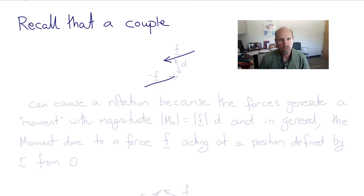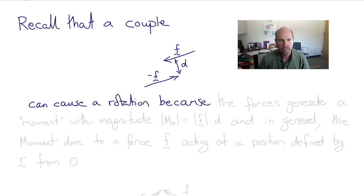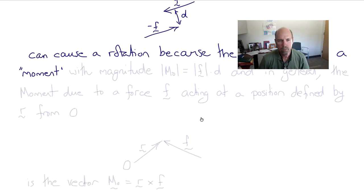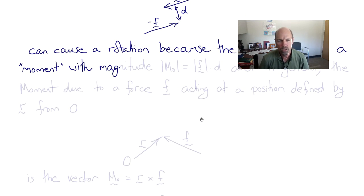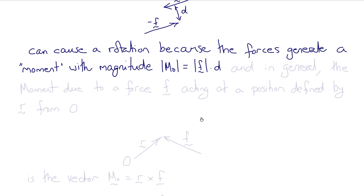Today we will introduce Newton's laws for angular motions. Let's start by recalling briefly that a couple created by two equal and opposite forces with different lines of action, separated by a distance d, can cause a rotation because those forces generate a moment. The moment has a magnitude M₀ of the magnitude of F times d.